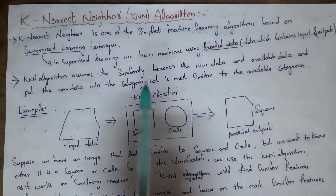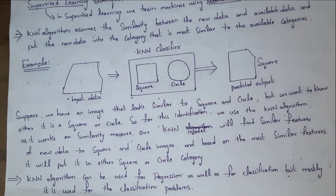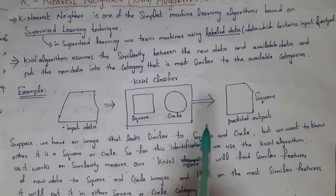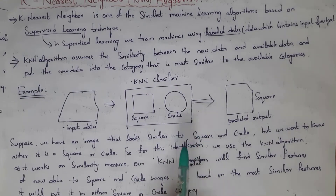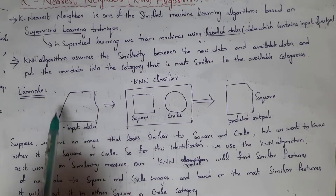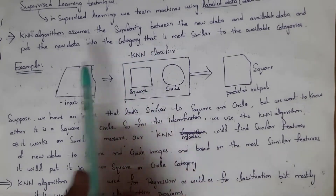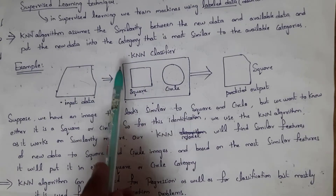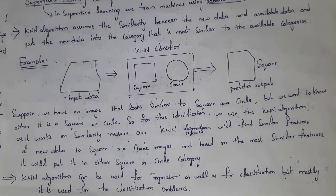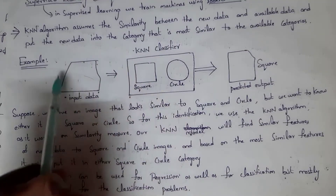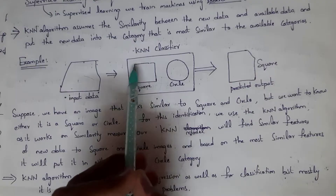For example, I have new input data and available data with two categories: square and circle. I want to place this new input data into one of these categories using the KNN classifier. It places the data based on similarity — since the input data looks similar to the square category, it is placed in the square category.